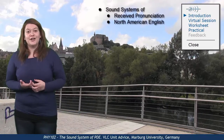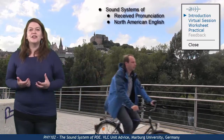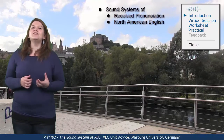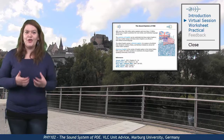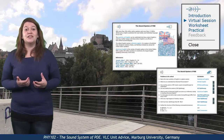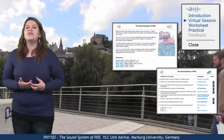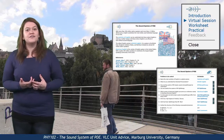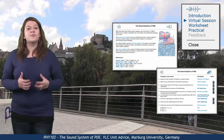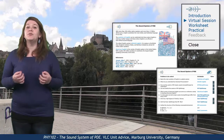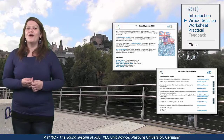Welcome to a unit that discusses the segmental phonological inventory of English on the basis of its two major varieties: British and American English. Each phoneme of English will be presented with its individual allophonic structure. In the virtual session, the question sheet can be used as a default guide through the unit. We will first provide an overview of the varieties of English in a global context and will then deal with the phonemes and their allophones in the British variety, Received Pronunciation, and then in North American English.